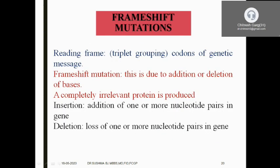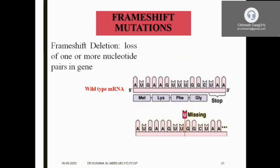What are frameshift mutations? Reading the frame means three consecutive nucleotides are read — that is the triplet codon. Frameshift mutation is due to addition or deletion of bases. When either addition or deletion occurs, an abnormal and non-functional protein is generated. Insertion means addition of one or two nucleotide base pairs. Deletion means loss of one or two nucleotide base pairs. An example of frameshift deletion: a wild-type mRNA codes for methionine, glycine, phenylalanine, and glycine followed by a stop codon. Here, one uracil is missing — this is a frameshift deletion.